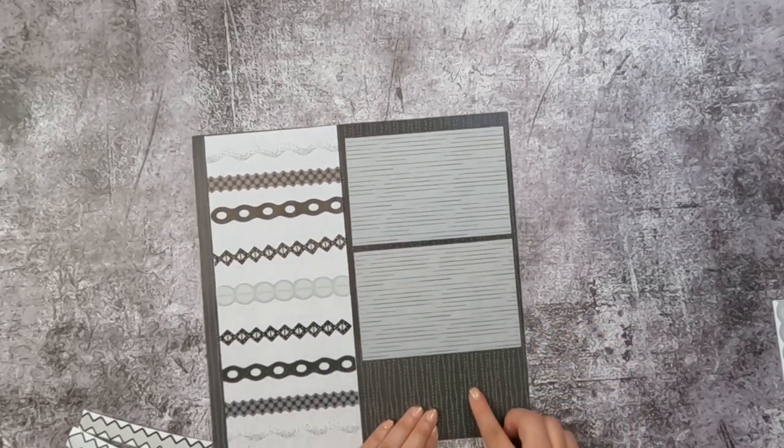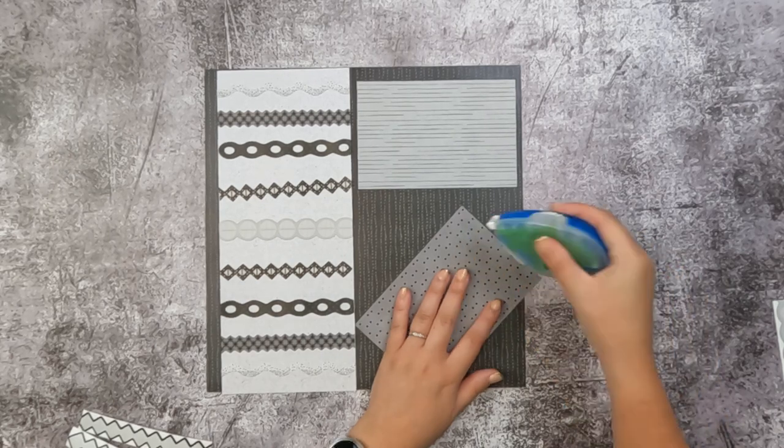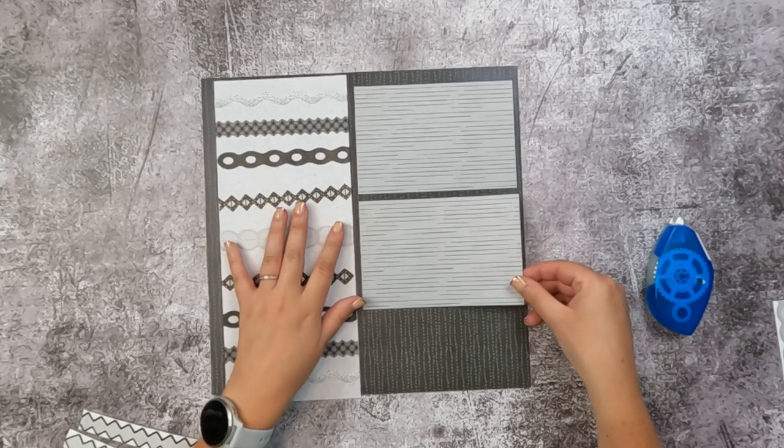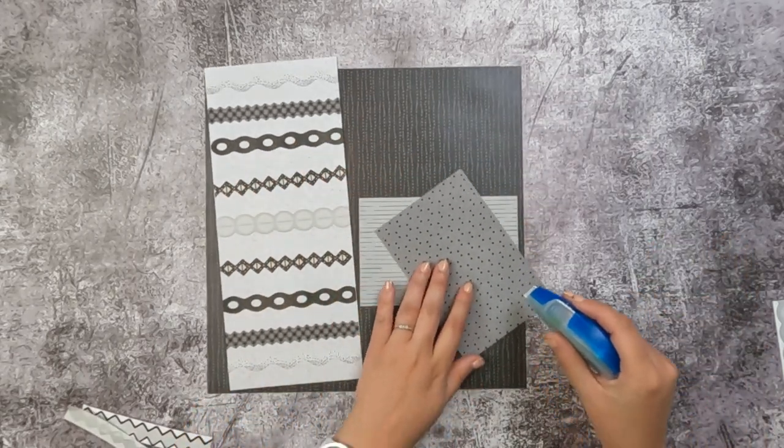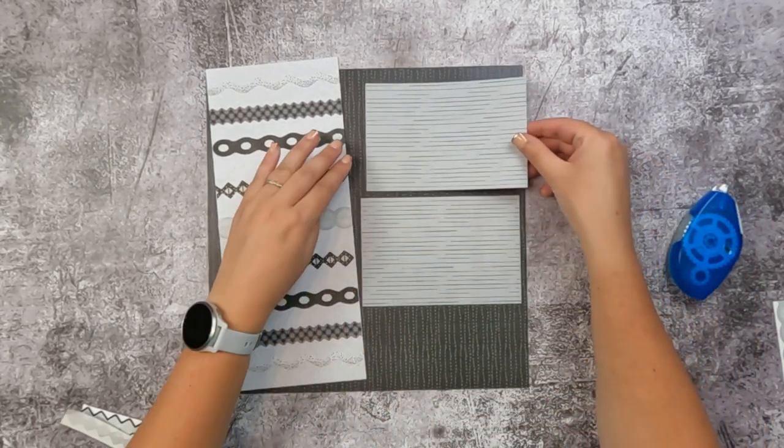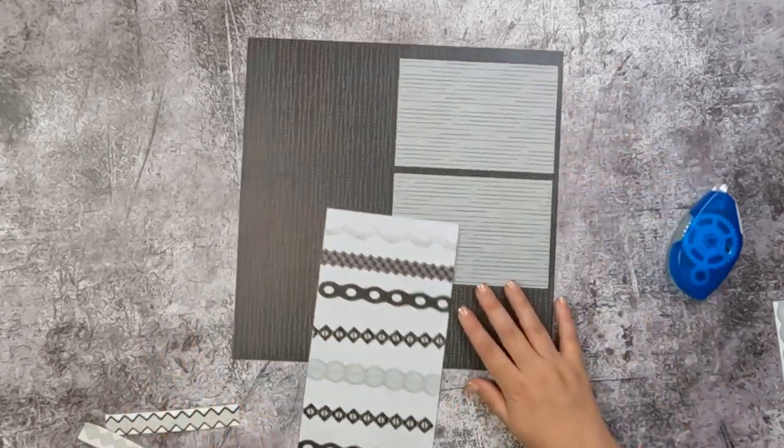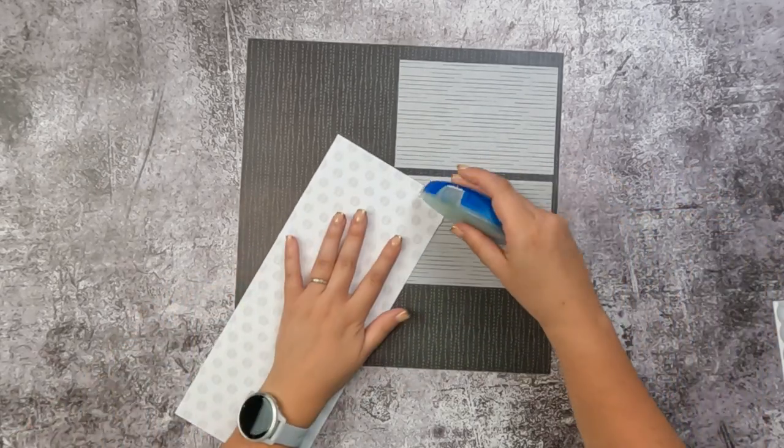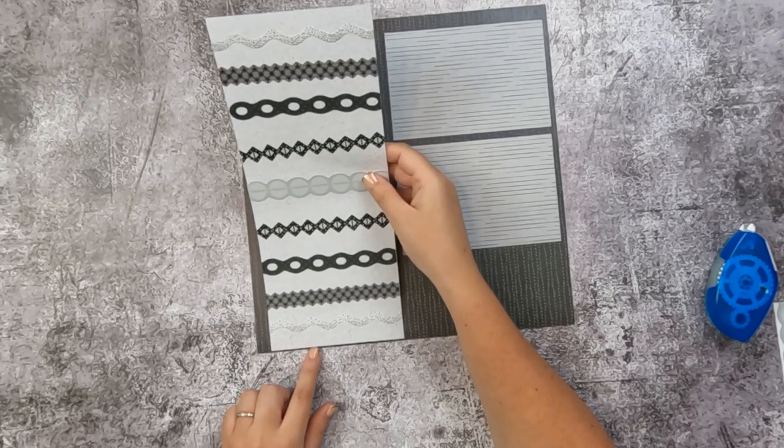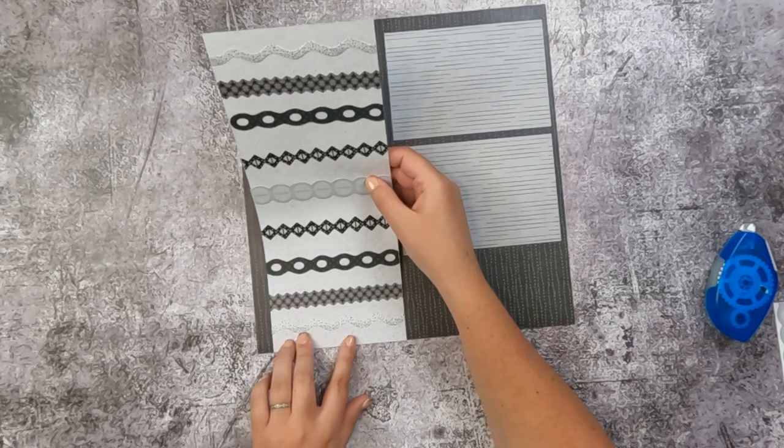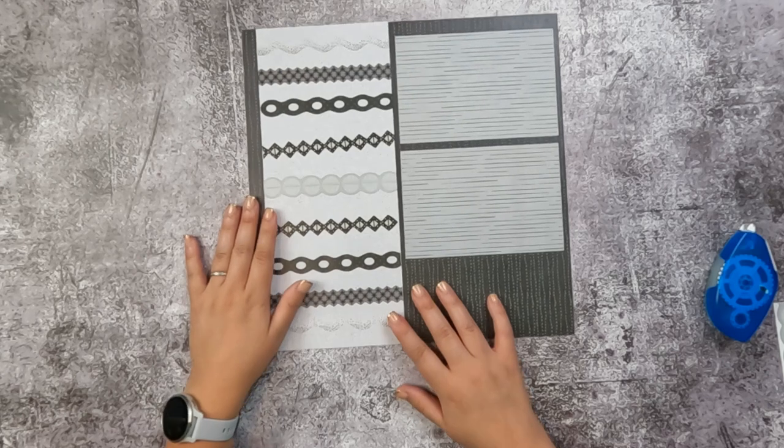And my mats are going to go here and here. I've got some room to do some journaling or some titling down here. So let me go ahead and put my mats down. And then now I'm going to put down that 5-inch border we created. I'm going to cheat that in about three-quarters of an inch, maybe a little more. All right, and you're done!